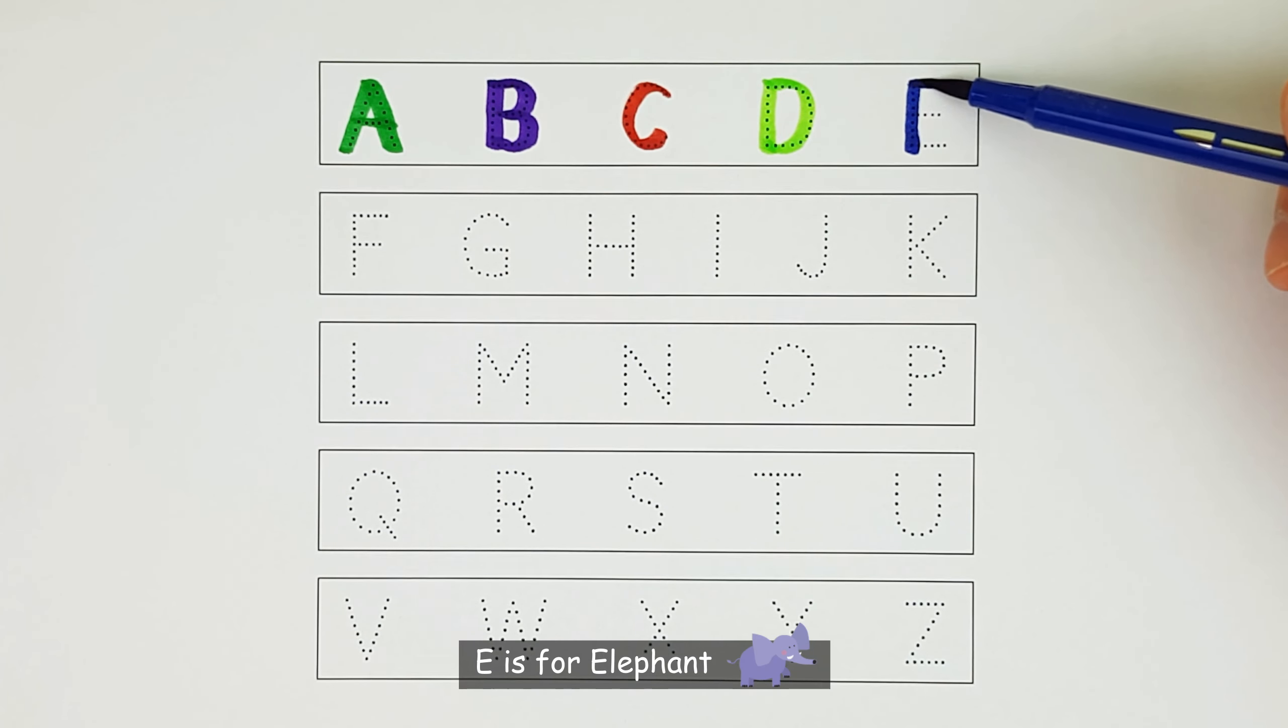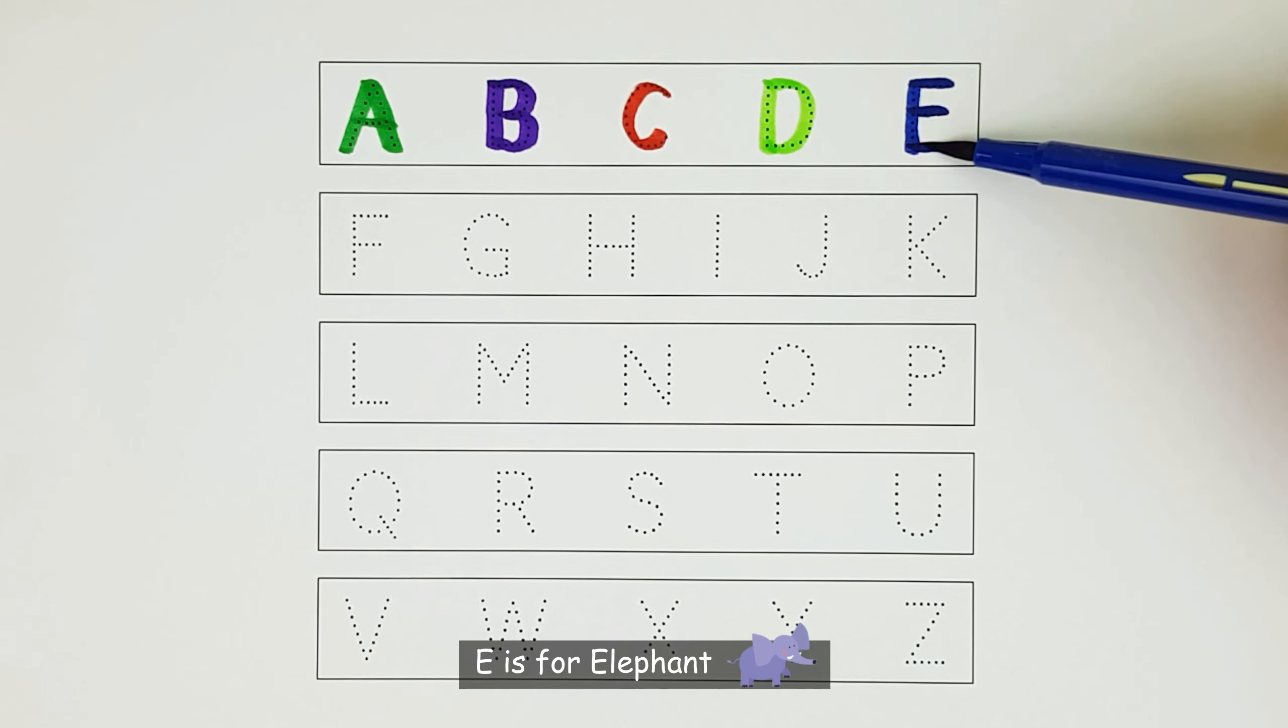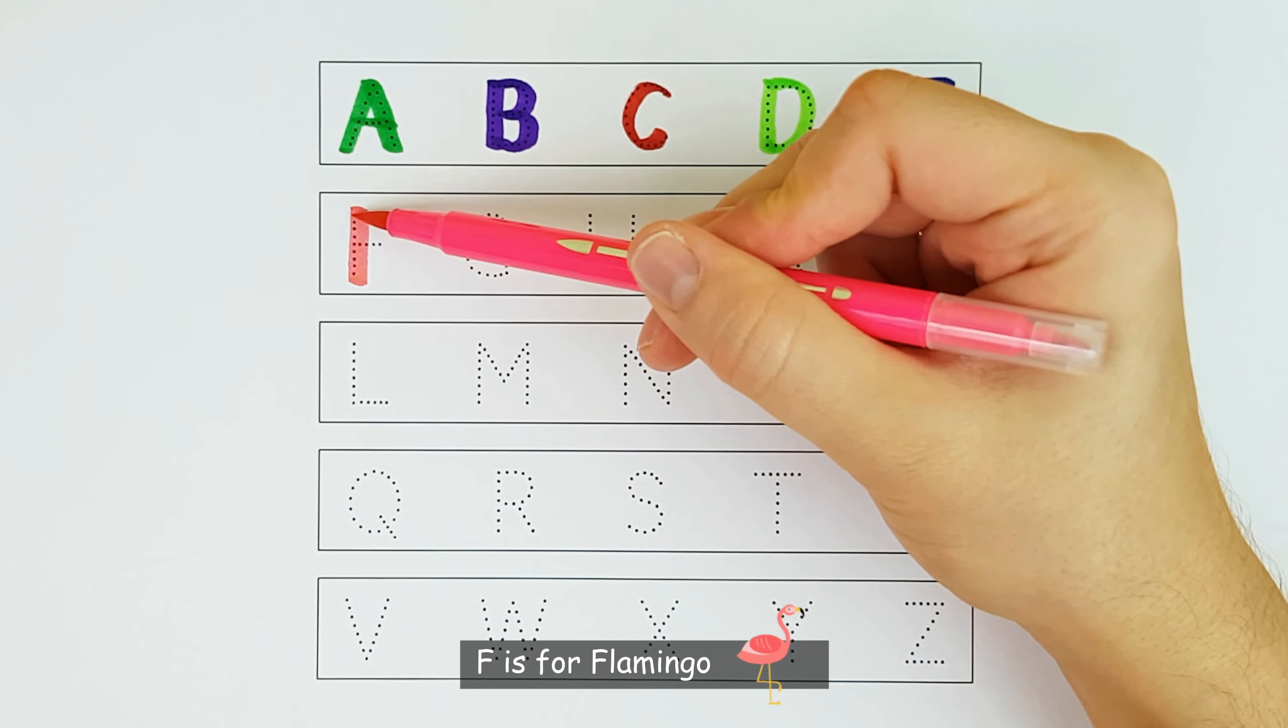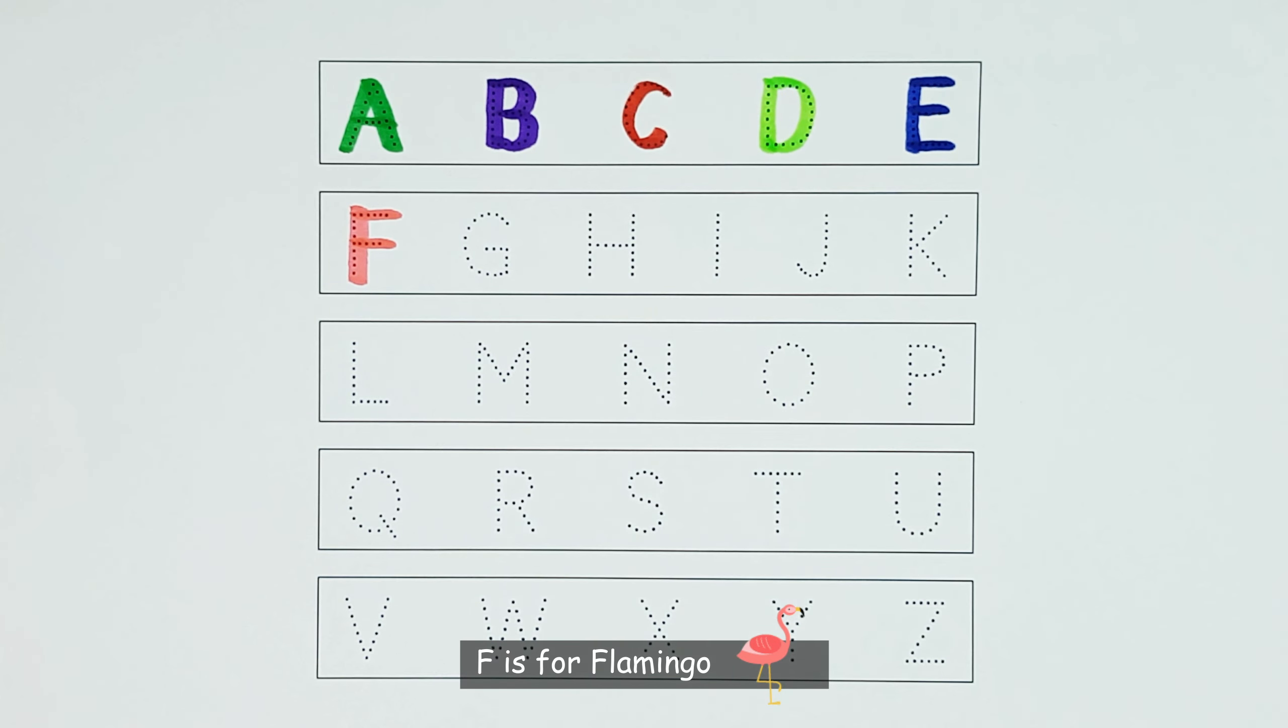E. E is for Elephant. E. F. F is for Flamingo. F.